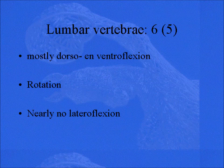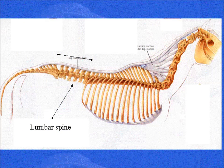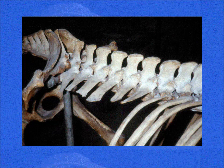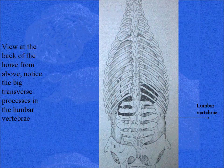The lumbar vertebrae — horses have six, the ribcage has five quite often. They really do a lot of up and down motion, quite some rotation, and nearly no lateral flexion. In the lumbar spine, they really cannot flex sideways. You can see that the lumbar spine is the connection between the sacrum, where the pelvic bones attach, and the ribcage — that's a very important part of the horse. Looking at the real skeleton image, you can see those horizontal processes sticking out — they're really long, and you can imagine there's nearly no lateral flexion possible, because they will touch each other.